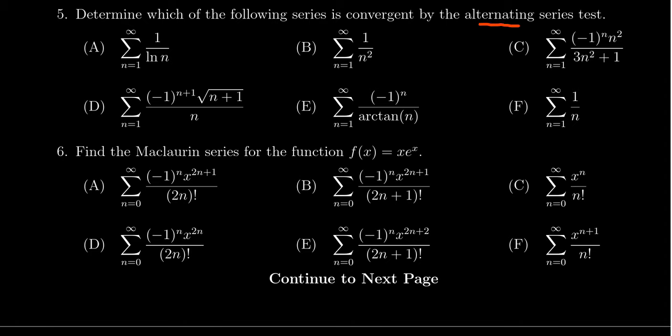So notice the test it specifies. It says the alternating series test. So whether we have a convergent series or not, we only care about the ones that can be proven convergent by the alternating series test. And as such, if a series is not an alternating series, then the alternating series test does not apply.